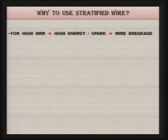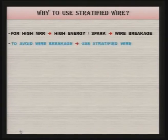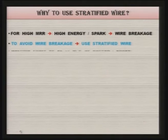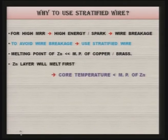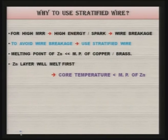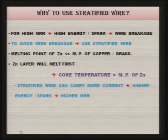For high MRR you need high energy per spark, but supplying high energy to a bare wire will cause it to break. To avoid breakage, use of stratified wire is recommended. In stratified wire, the zinc layer melts first because its melting point is much lower than that of copper or brass, so the core temperature remains below the melting point of zinc and the chance of breakage is minimal. Stratified wire can carry more current — meaning higher energy per spark and higher MRR — without breakage.